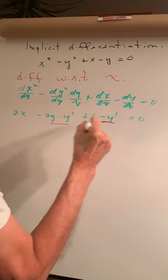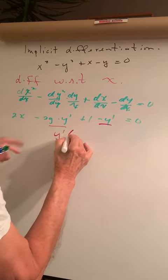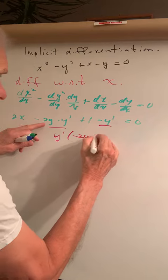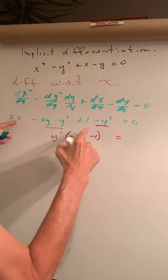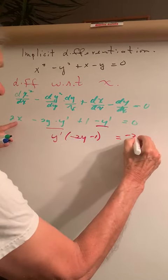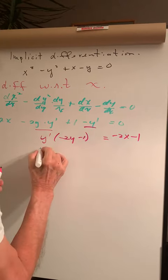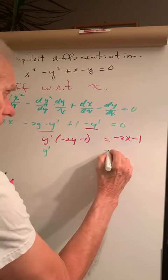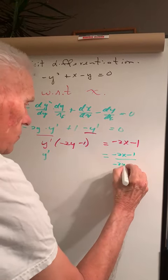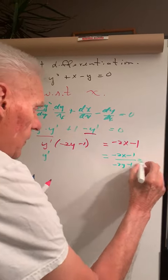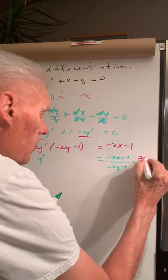Let's factor out y', so y'(2y - 1) equals... transpose this to the other side. Now I divide both sides, so y' equals (-2x - 1)/(-2y - 1), which we can make all positive to become (2x + 1)/(2y + 1).